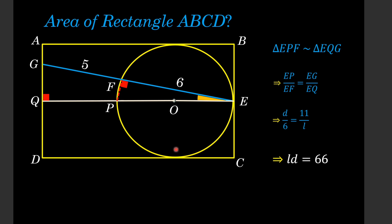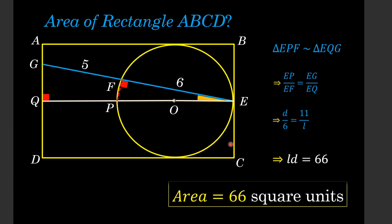Now, L is the length of rectangle ABCD and D is the diameter of the circle. If we compare BC and D: BC is also the diameter of this circle, and it is actually the breadth of the rectangle. So 66 is equal to the length times the breadth of the rectangle, which is actually the area of the rectangle. Thus, the area of the rectangle equals 66 square units.